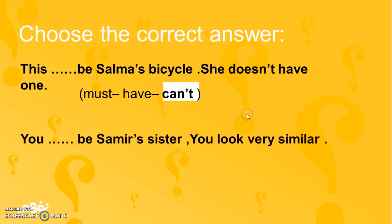Just focus, she doesn't have one. It's an evidence, right? Can't. This can't be someone's bicycle, she doesn't have one. The second one: You be twin sisters, you look very similar. That evidence, we should use must.